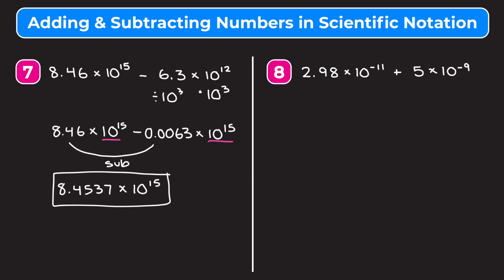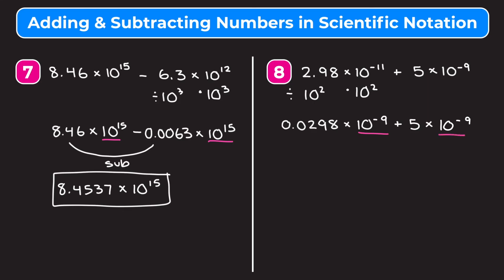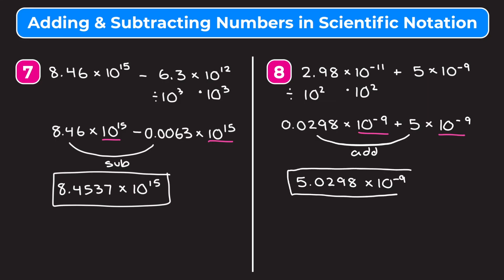Finally, our last example: 2.98 times 10 to the negative 11th plus 5 times 10 to the negative 9th. I want to change 10 to the negative 11th into 10 to the negative 9th by multiplying by 10 squared, which means I divide 2.98 by 10 squared — moving the decimal two places left to get 0.0298. 10 to the negative 11th times 10 to the second gives 10 to the negative 9th. My second number stays as 5 times 10 to the negative 9th. Adding 0.0298 and 5 gives 5.0298 times 10 to the negative 9th as my answer.